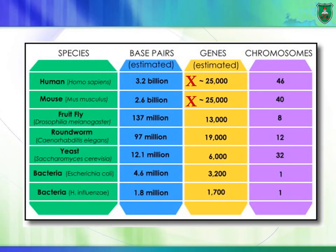This is a comparison of the different genomes among several organisms. We know that the human genome is composed of about 3 billion base pairs, and these 3 billion base pairs are distributed among 46 chromosomes.